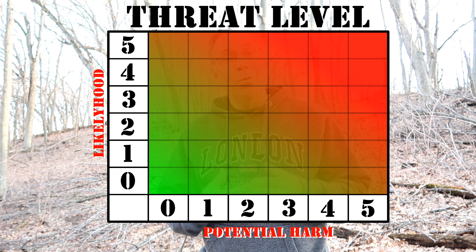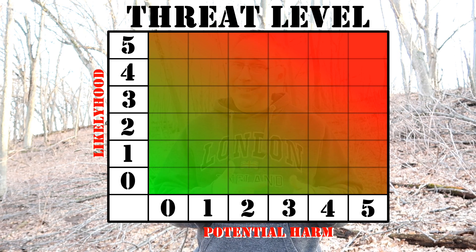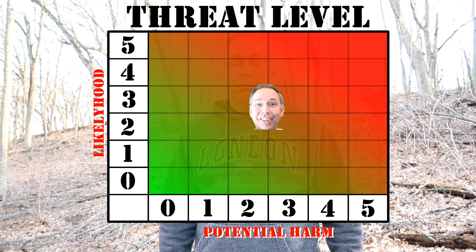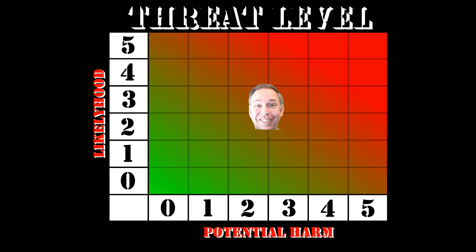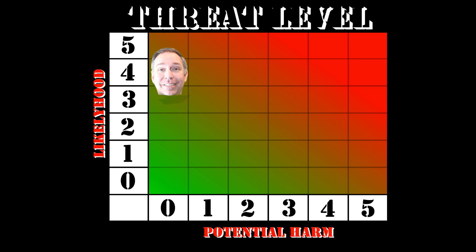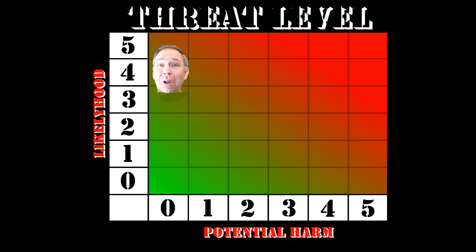You can take this chart and stick it inside your head. The numbers down the side are how likely the bad thing is going to happen. Five means it's going to happen. Four means probably. All the way down to zero, which means it's never really going to happen.